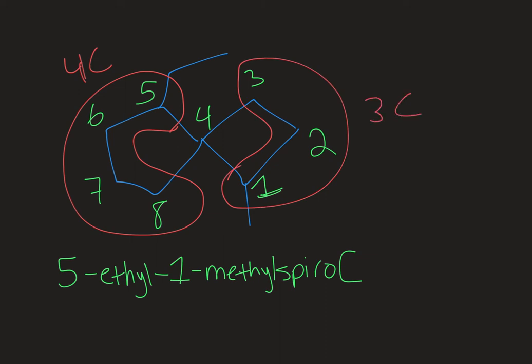Now remember when we do spiro we go small and then big. So this would be three period four and then octane for my total number of carbons. So I have 5-ethyl-1-methyl-spiro-3-4-octane.